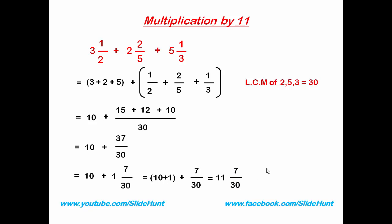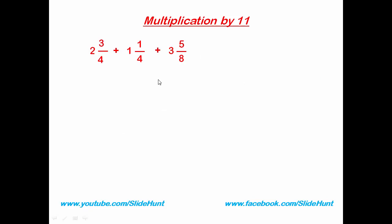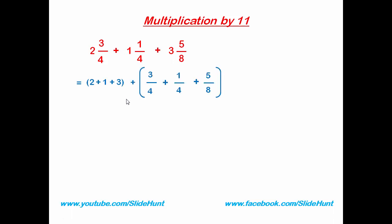Let us see another example. Add this number: 2 and 3/4 plus 1 and 1/4 plus 3 and 5/8. First, separate the whole numbers and the fractional values. The whole numbers are 2, 1, and 3. So 2 plus 1 is 3, and 3 plus 3 is 6. Now add the fraction values.